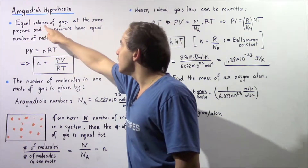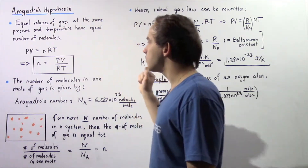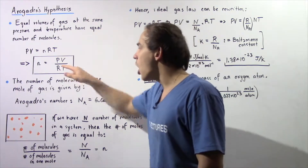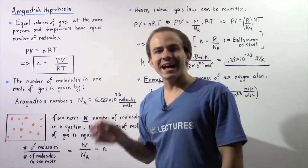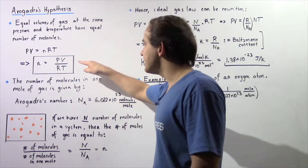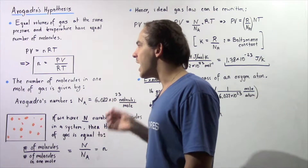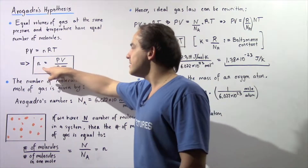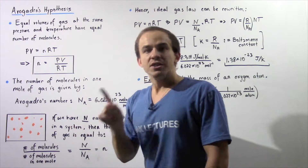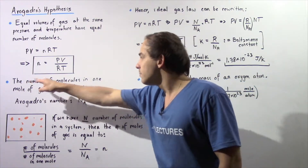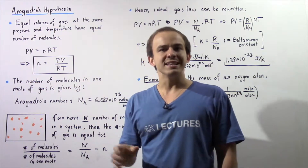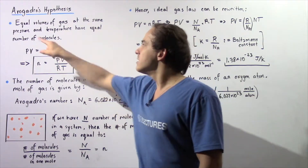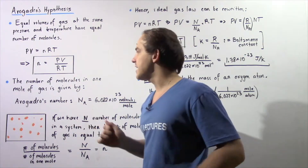For equal volumes of gas at the same pressure and temperature, we have constant P, constant V, and constant T. And because R is exactly the same for any gas, this entire ratio is also constant for any gas that has the same volume, pressure, and temperature. That means the number of moles is the same. And since the number of molecules in one mole of gas is exactly the same, not only is the number of moles the same, the number of molecules is exactly the same as well.